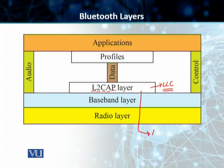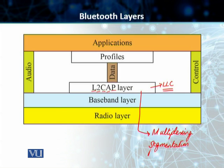Multiplexing is done at this layer. We do segmentation here at the sending end, and at the receiving end this layer takes part in the reassembly as well. So: multiplexing, segmentation, and reassembly.